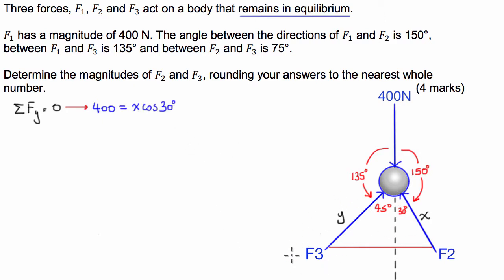And similarly, with F3 or y, we're going to add the component of that vector in the vertical direction. So y times the cosine of 45. So now we've got a relationship between the 400 newtons going down and F2 and F3 going up.